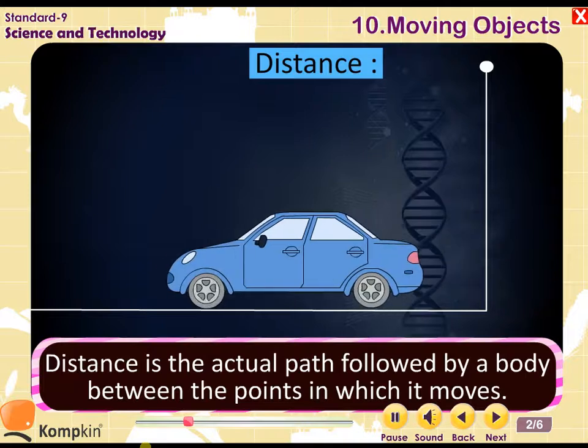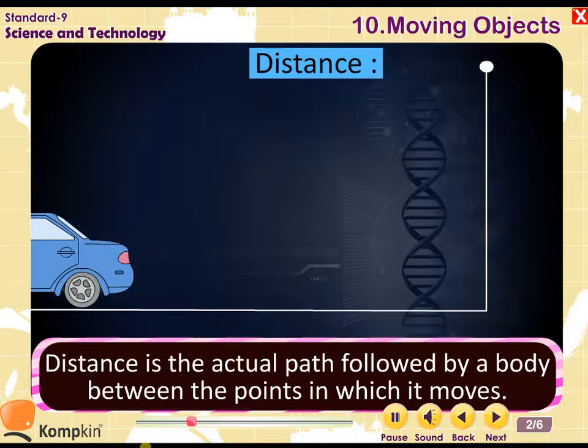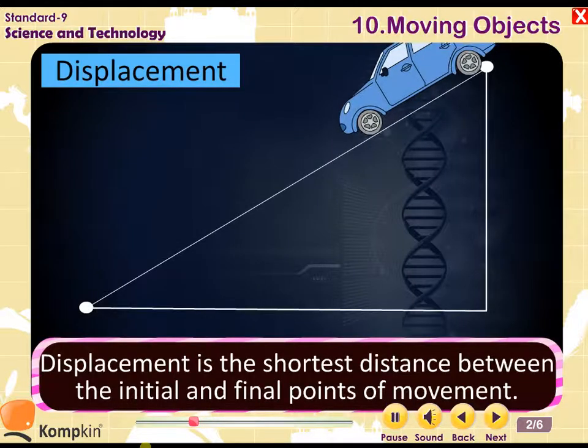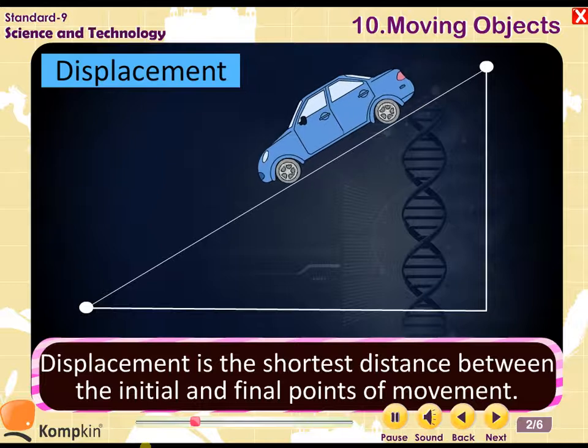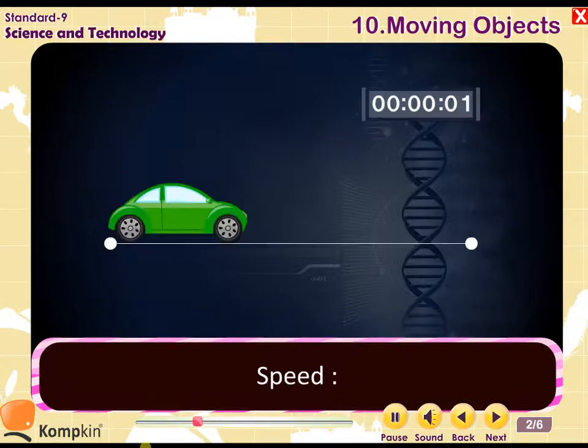Distance is the actual path followed by a body between the points in which it moves. Displacement is the shortest distance between the initial and final point of movement.